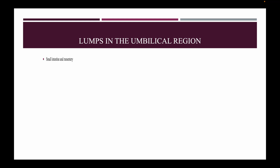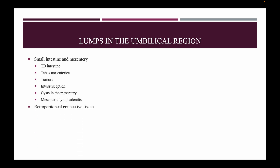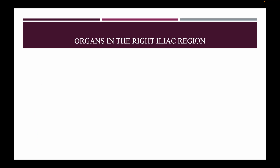Lumps in the umbilical region — in the small intestine and mesentery: TB intestine, TB mesentrica, tumors, intussusception, cysts in the mesentery, and mesenteric lymphadenitis. In the retroperitoneal connective tissue: retroperitoneal cyst, retroperitoneal lymphoma, and retroperitoneal sarcoma.